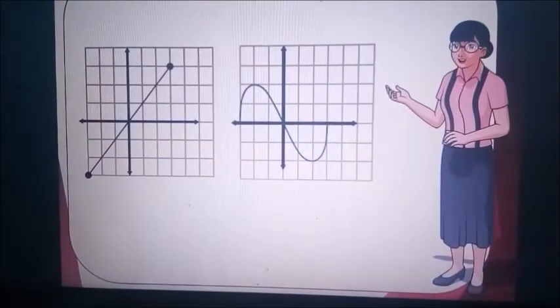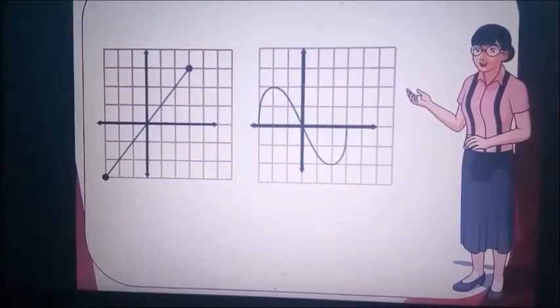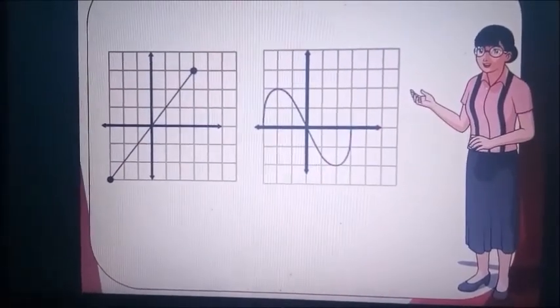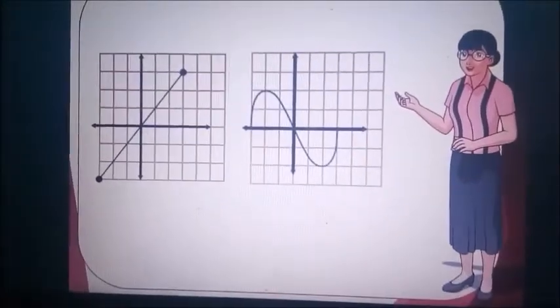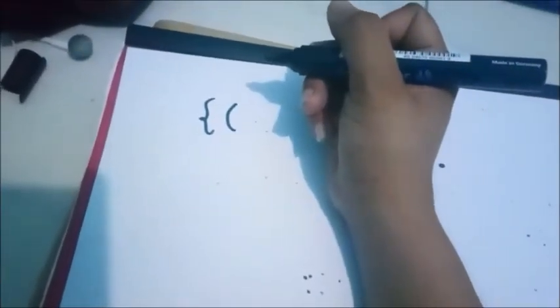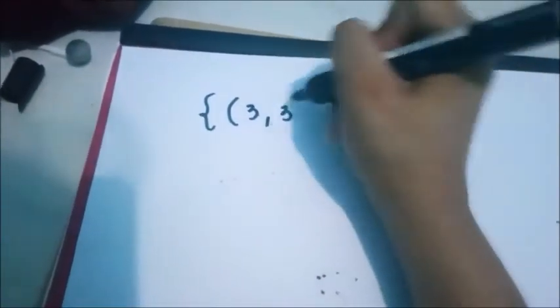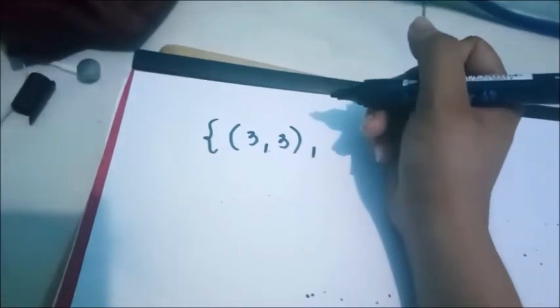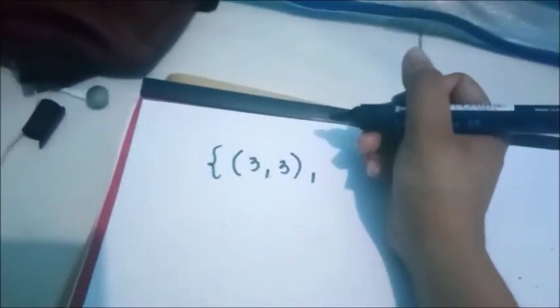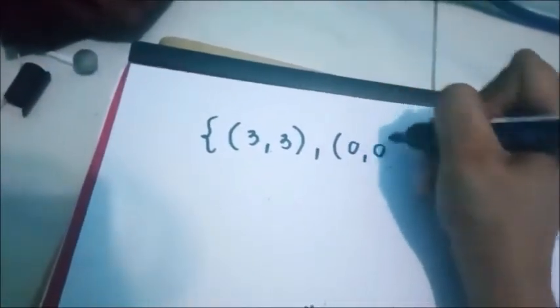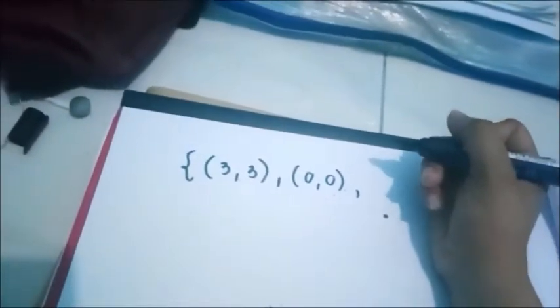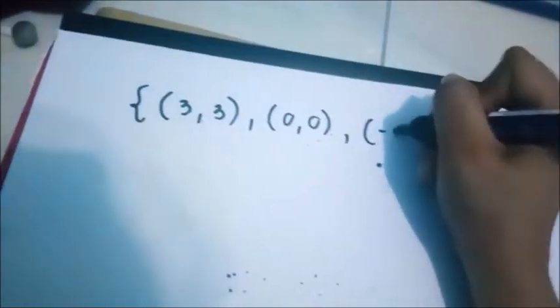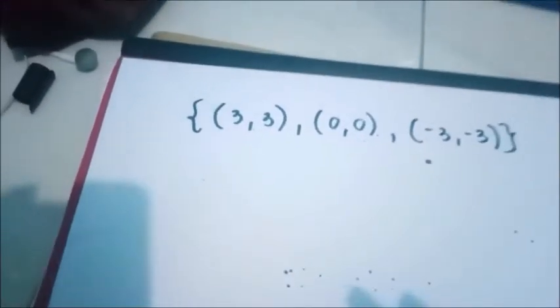Let us have another one. So first, we're going to list all the coordinate points, or the ordered pairs. We have an ordered pair of 3 and positive 3. Then another one, the graph intersects our origin, so we have 0, 0. Another ordered pair, we have negative 3 and negative 3. So this will be the list of our ordered pairs.